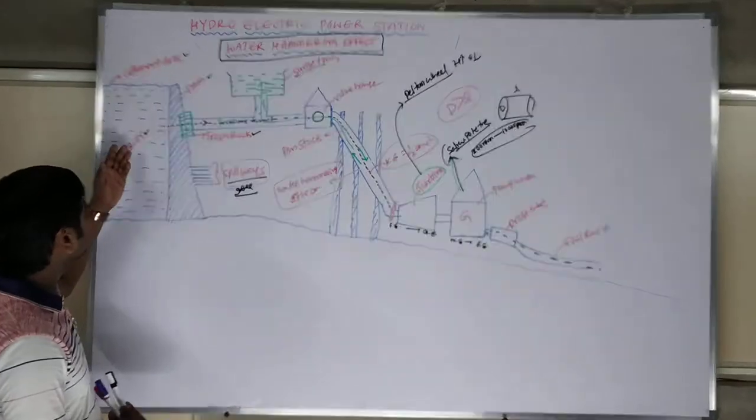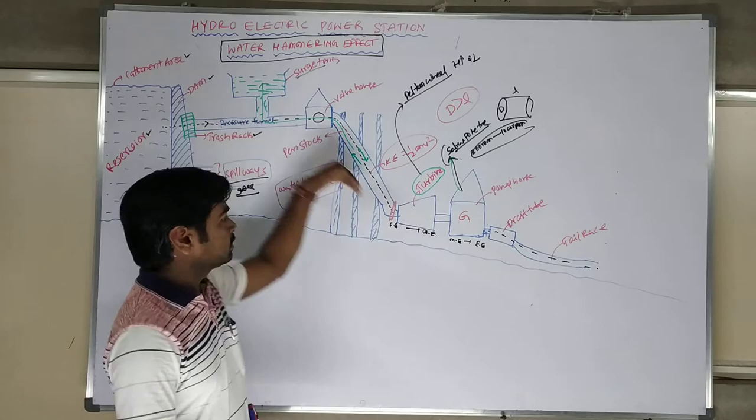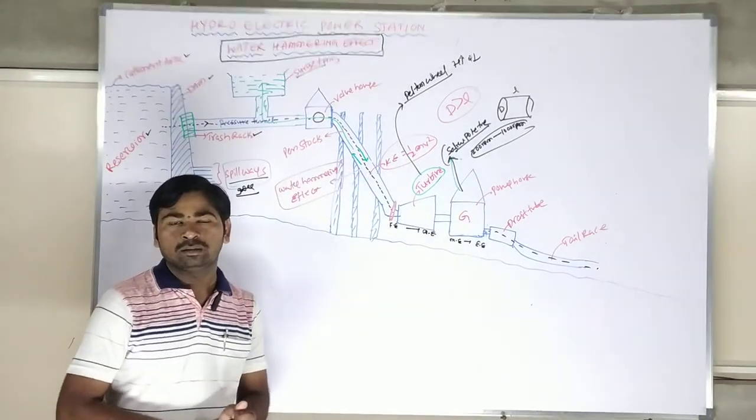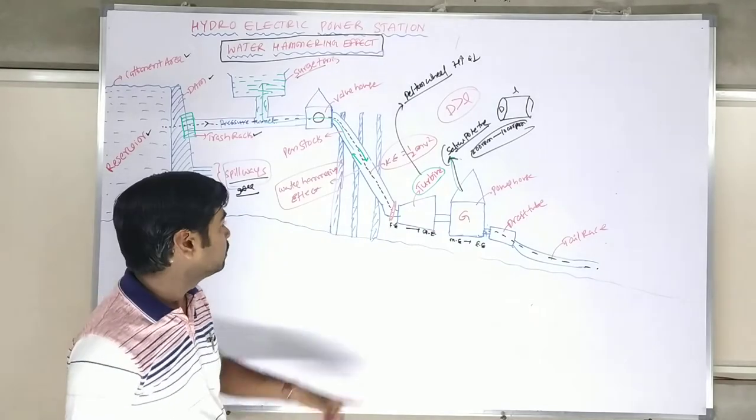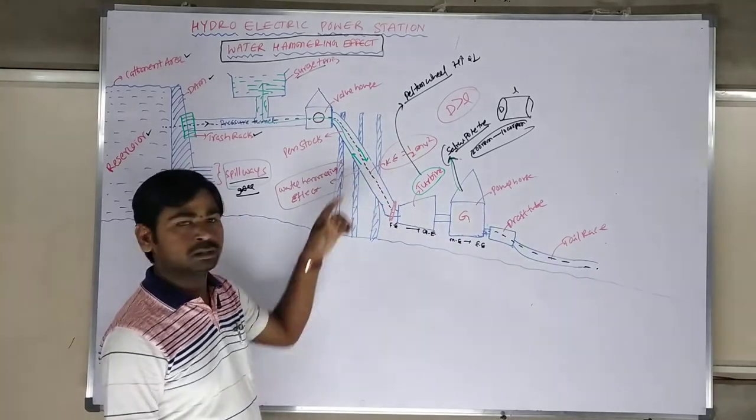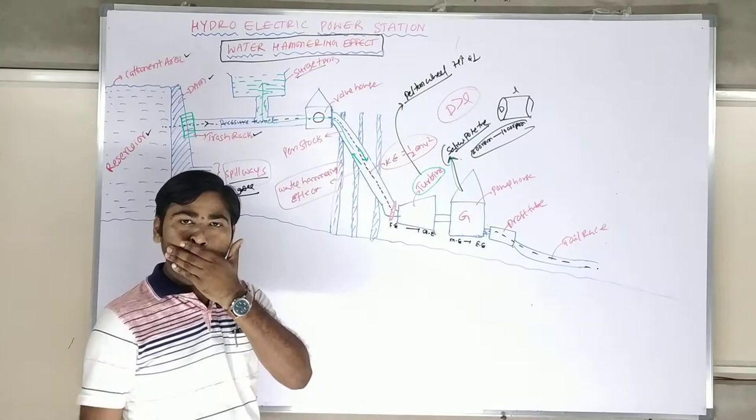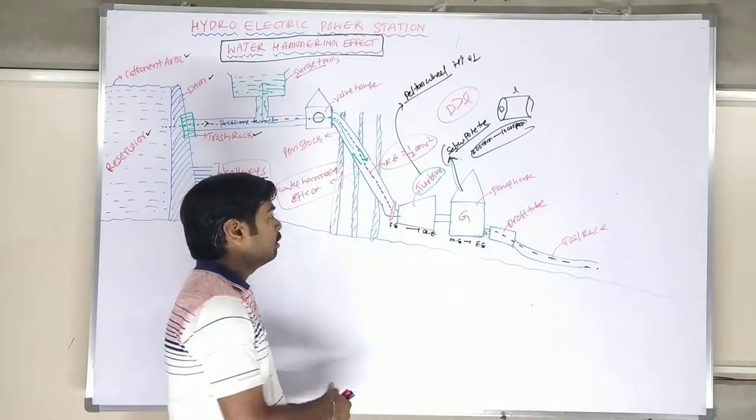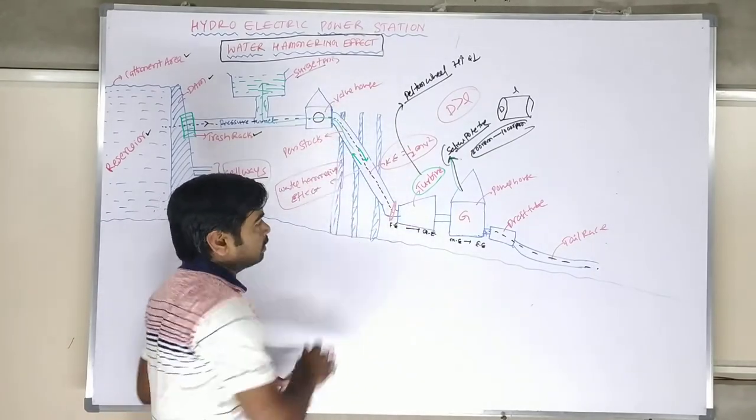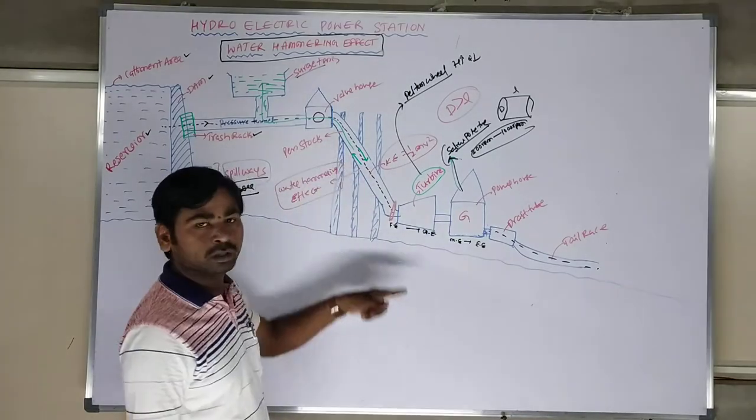Actually, the process keeps going on. Whenever there is a fault on the generator or on the penstock, please focus on the video. What you have to do is close the valve. You have to close the valve here and valve here. When you suddenly close the valve here.